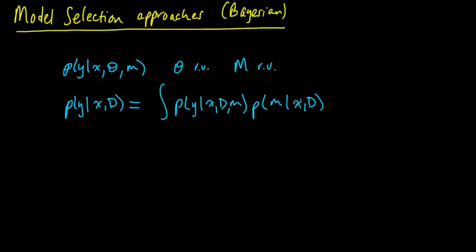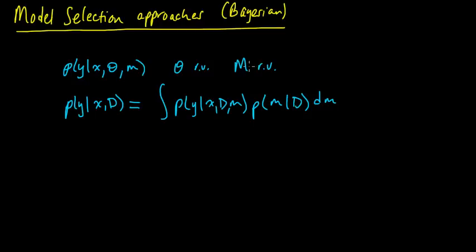Usually we assume X is some fixed non-random thing in this setup, so X is just the value that we want to predict Y for. This is just the probability of the model given the data, integrating with respect to M. Here I wrote it as an integral, but if M were countable or took values in a finite set, this would be a sum — or it could be some combination of a sum and an integral.